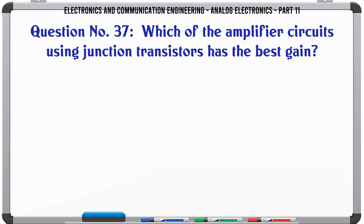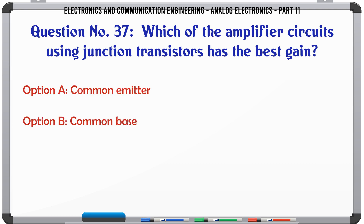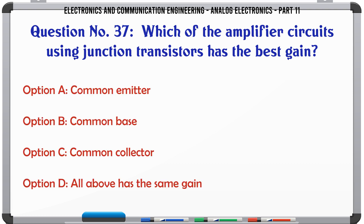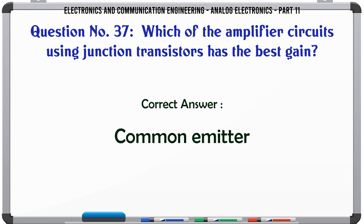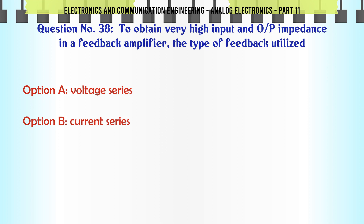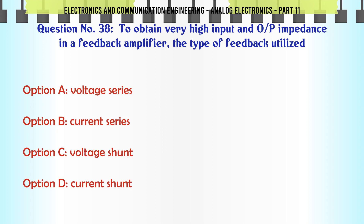Which of the amplifier circuits using junction transistors has the best gain? A. Common emitter. B. Common base. C. Common collector. D. All above have the same gain. The correct answer is: Common emitter.